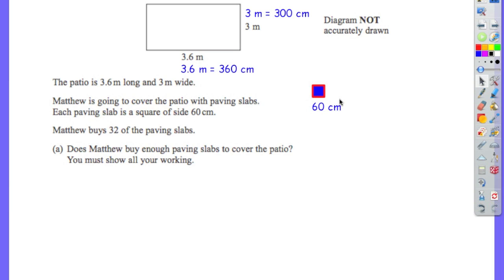I've drawn a quick sketch of what a paving slab would look like. It's a square and each side is 60 centimetres. There are two ways of approaching this question. The first way is practically looking at it and seeing whether the slabs will fit. The second way is working out the area and then doing some division. Because it comes up early on in the paper, I'd recommend the first option — it will be quicker and you'll still get full marks.